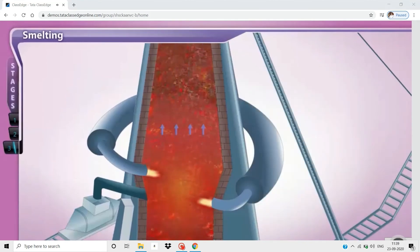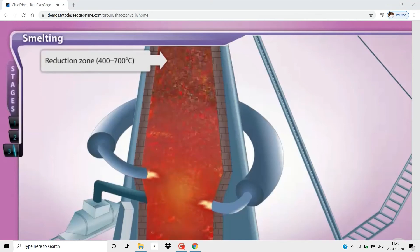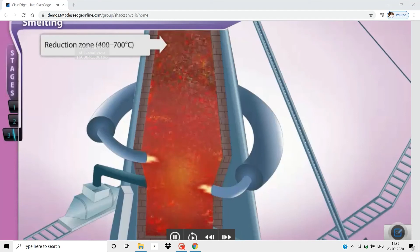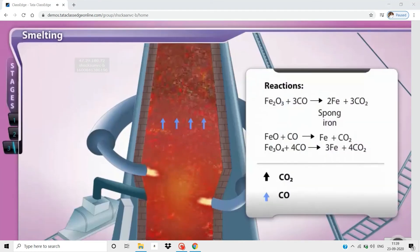The carbon monoxide formed in the combustion zone rises to the reduction zone at the top of the furnace. The temperature in this zone is 400 to 700 degrees Celsius. Carbon monoxide reduces the iron oxides in the ore to iron at this temperature.